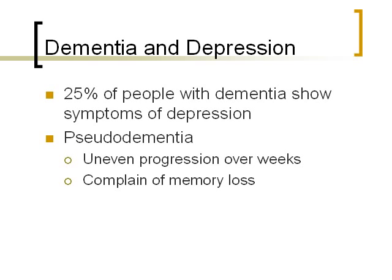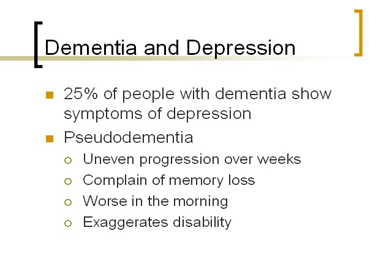People with pseudo-dementia are more likely to complain about their memory loss, whereas people who actually have dementia often try to hide it and cover it up — they'll make excuses. People who are depressed with cognitive impairments will openly complain. Symptoms in pseudo-dementia tend to be worse in the morning than in the evening. They're also more likely to exaggerate their level of disability — saying they can't do anything — whereas someone with real dementia tries to hold on to as much autonomy as possible.